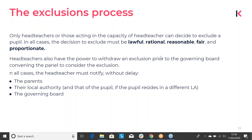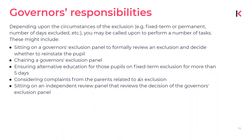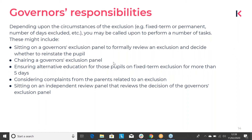This is your role in the exclusions process. Depending on the circumstances of the exclusion, you could be called on to perform any number of tasks, which might include sitting on or chairing a governor's exclusion panel, making sure that alternative education is provided to pupils who have had a fixed-term exclusion of more than five days, considering complaints from parents, or even sitting on an independent review panel in an appeals process, assuming you've been through the proper training.